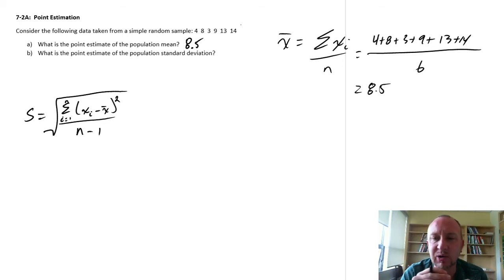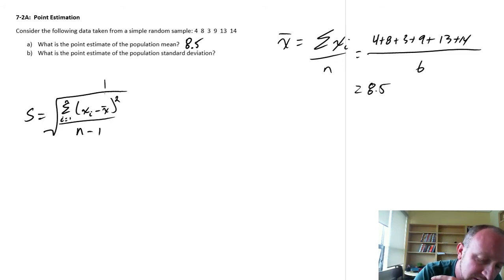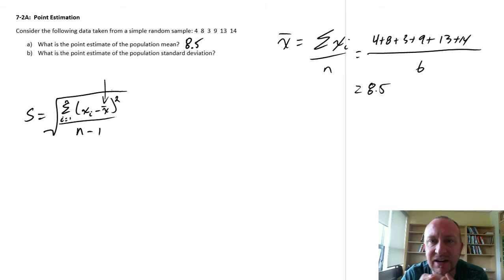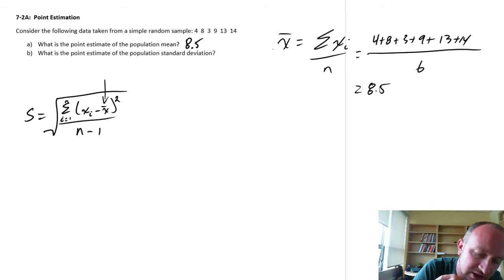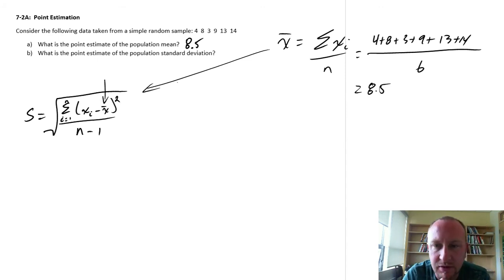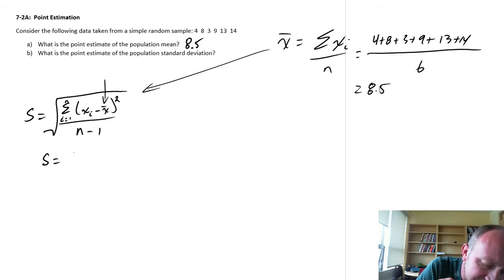So I'm going to write it out in its entirety, just so you have some idea of exactly what it is we're working with. So here you can see that we need to have this point estimate of the mean for this calculation. So that's what we've already got. We'll put that right into that formula. So what we need to do here is the first thing we have to do is calculate all of these deviations.